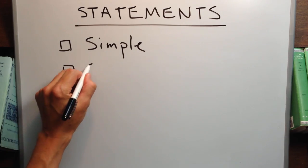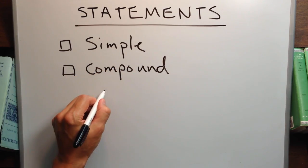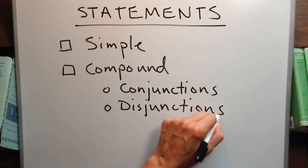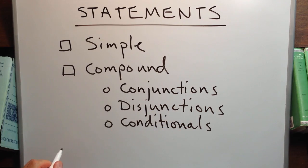Simple statements and compound statements, including conjunctions, disjunctions, and conditionals. Then I'm going to explain some symbols for representing statements.